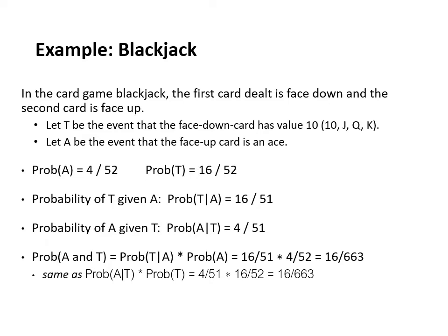Let's do one more example that leverages the blackjack game. In the card game blackjack, the first card dealt is face down and the second card is face up. Let T be the event that the face-down card has value 10 — so it's either a 10, jack, queen, or king — and A be the event that the face-up card is an ace. We want to compute the probability that both of these events happen using the general product rule. The probability of event A happening is 4 divided by 52, because we have four aces in the deck and 52 cards total.